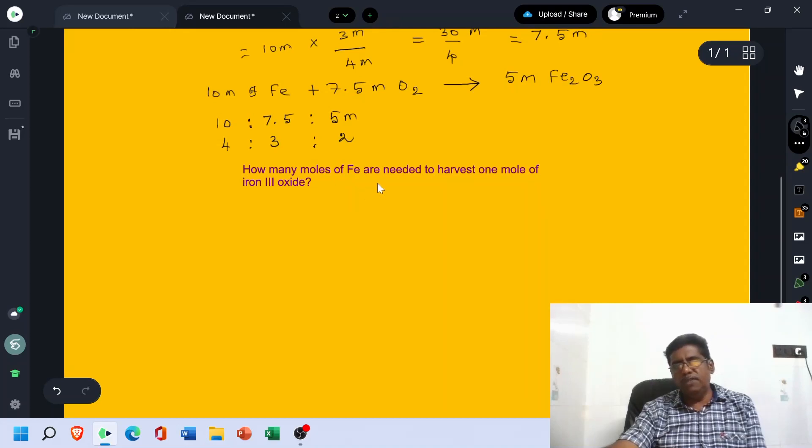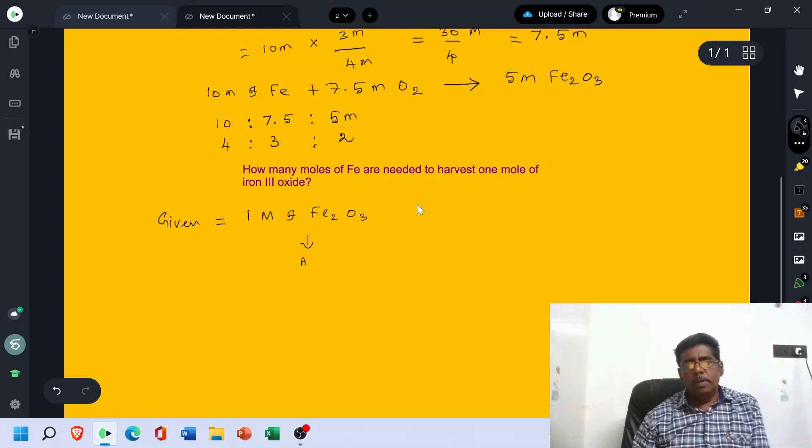How many mols of Fe are needed to harvest 1 mol of Ion3Oxide? Here, given equal to 1 mol of Fe2O3. This is A.